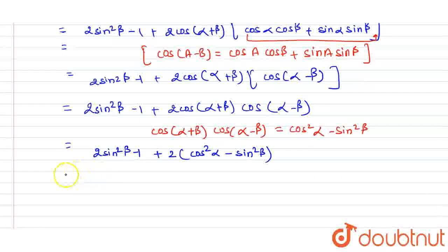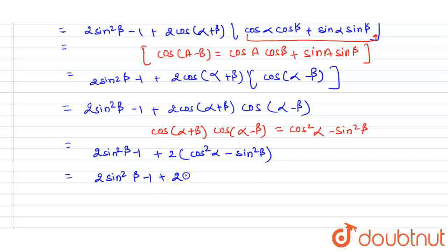Simplifying, we get 2sin²β - 1 + 2cos²α - 2sin²β. The 2sin²β terms cancel out, leaving 2cos²α - 1.